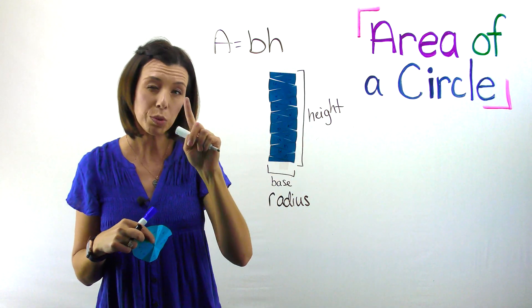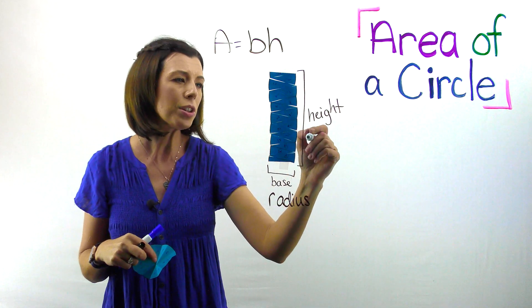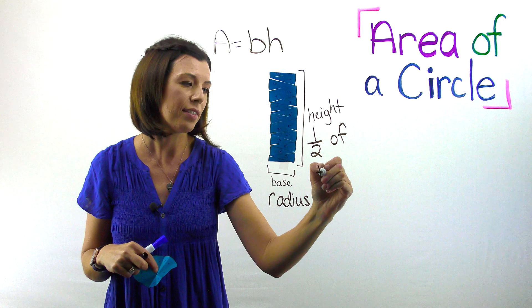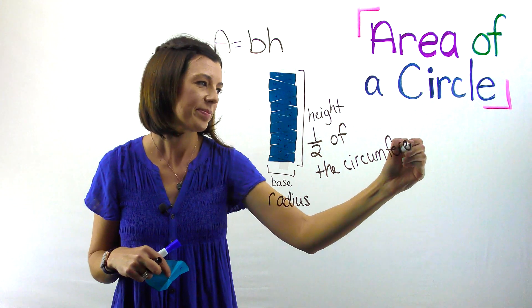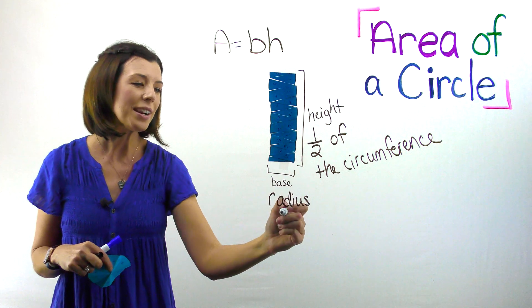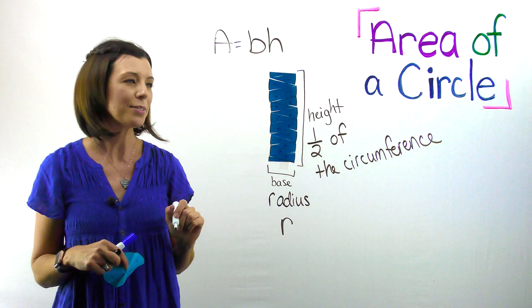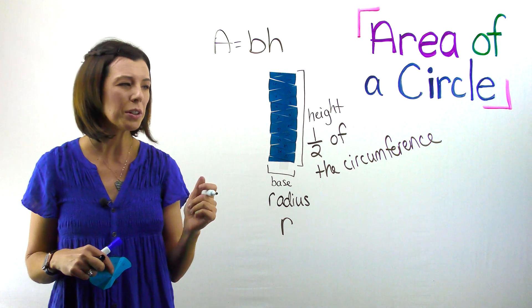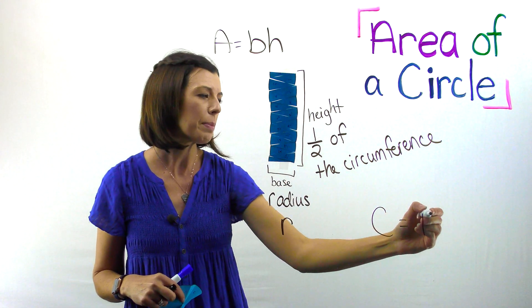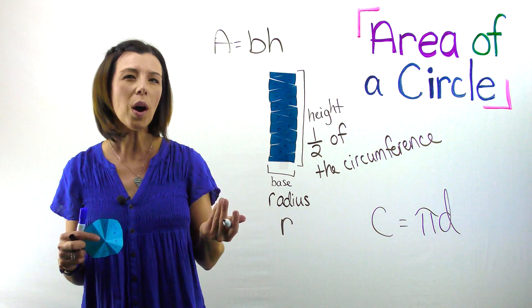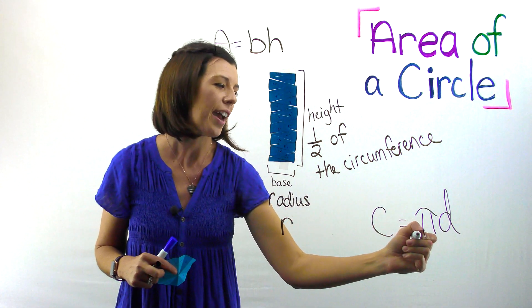So this height, if I just want one of them, is actually not going to be the circumference. It's going to be one half of the circumference. So now let's plug it into our formula. So I have radius, I'm going to put an R for the radius. And one half of the circumference, we might need to do a little math. Because if circumference equals pi times diameter, then what would be half of that?